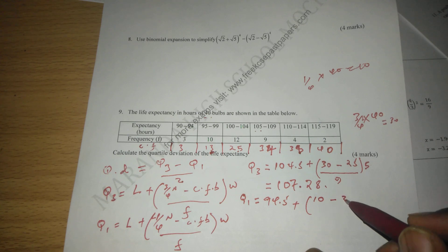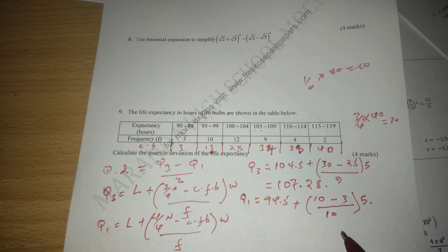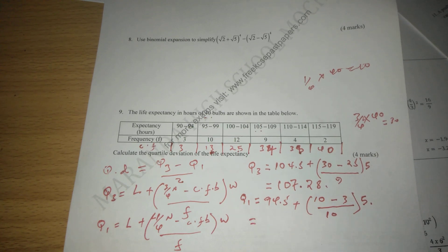Then we add a quarter of the data, which is 10, minus the cumulative frequency before that class, which is 3, divided by frequency of the class, which is 10, and we multiply with a class width of 5.